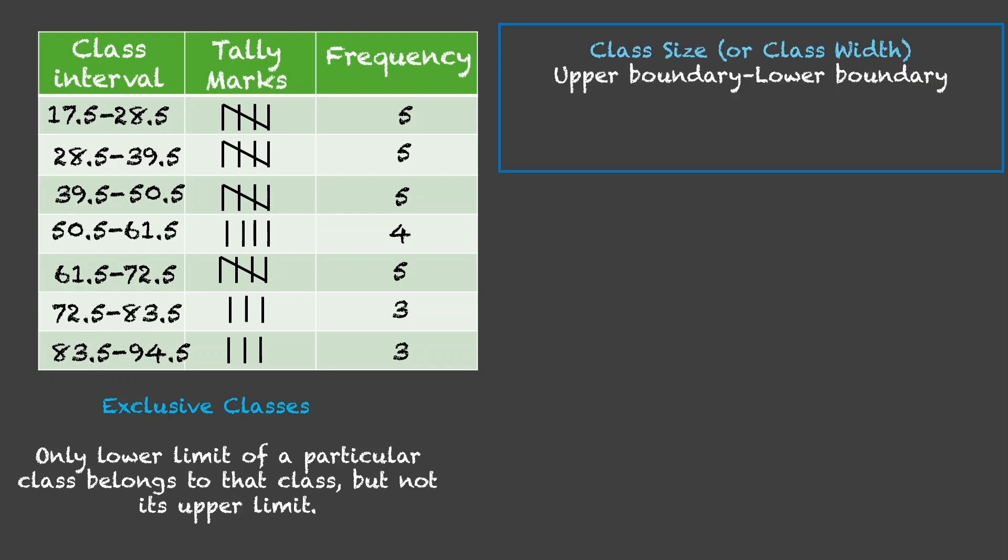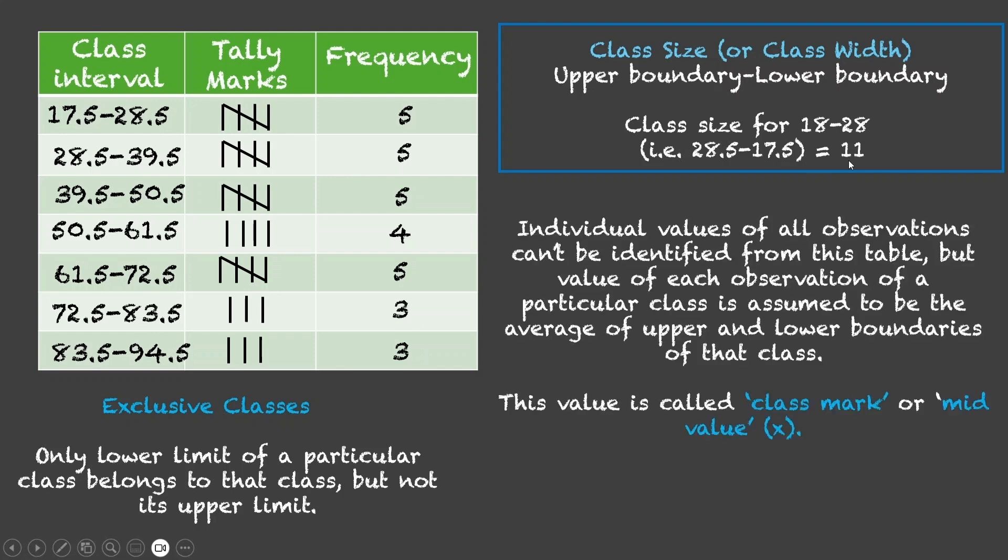Now, for these classes, the class size or class width can be given by upper boundary minus lower boundary. For example, the class size for the first class which was 18 to 28. Now, once we have found out its boundaries, the class size would be upper boundary minus lower boundary, 28.5 minus 17.5 which is 11. That's also one thing that we should note.